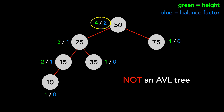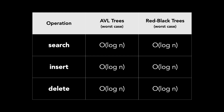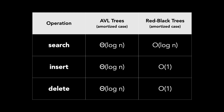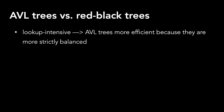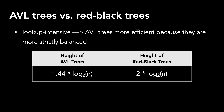Next, let's take a look at how AVL trees compare to red-black trees. In the worst case, AVL trees and red-black trees have identical time complexities for search, insert, and delete — O(log n). However, for amortized time complexity, red-black trees have a time complexity of O(1) for insert and delete. If your application is lookup intensive, AVL trees are more efficient because they are more strictly balanced. The height of an AVL tree is bounded by 1.44 times log base 2 of n, while red-black trees are bounded by 2 times log base 2 of n.